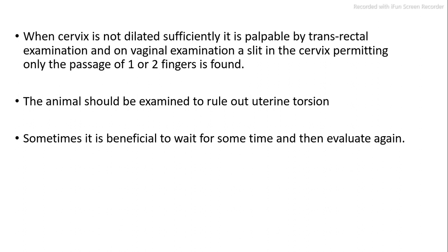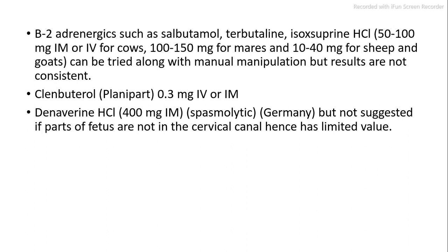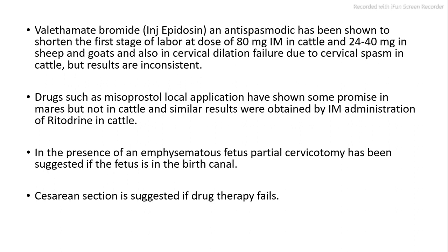The animal should be examined to rule out uterine torsion. It is sometimes beneficial to wait and re-evaluate. Beta-2 adrenergics such as salbutamol, terbutaline, and isoxuprine HCl — 50–100 mg IM or IV for cows, 100–150 mg for mares, and 10–40 mg for sheep and goats — can be tried with manual manipulation, but results are not consistent. Clenbuterol (Planipart) 0.3 mg IV or IM. Deneverein HCl 400 mg IM (spasmolytic, Germany) has limited value if fetal parts are not in the cervical canal. Valethamate bromide (Epidosin), an antispasmodic, has been shown to shorten the first stage of labour at 80 mg IM in cattle and 24–40 mg in sheep and goats, and also in cervical dilation failure due to cervical spasm, but results are inconsistent.